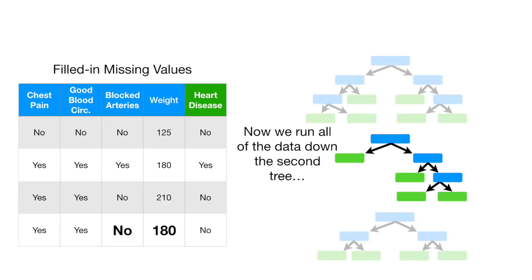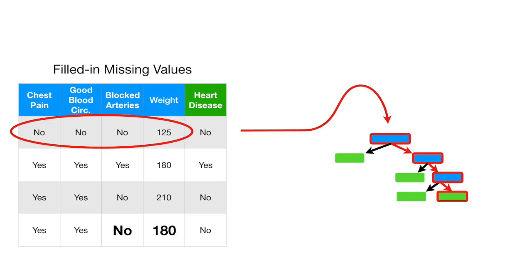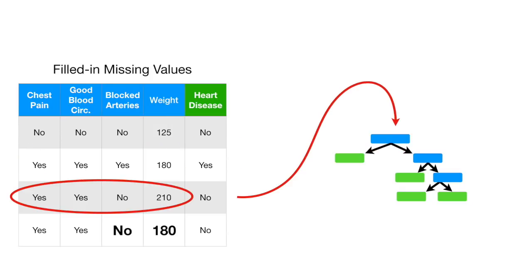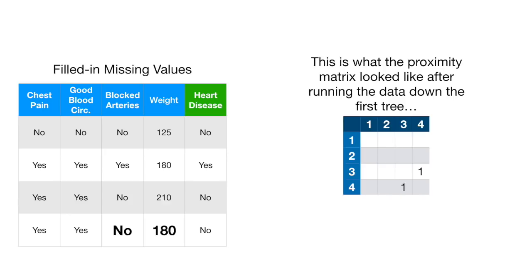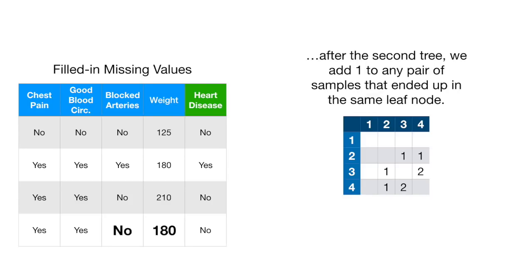Now we run all of the data down the second tree. Note samples two, three, and four all ended up in the same leaf node. This is what the proximity matrix looked like after running the data down the first tree. And after the second tree, we add one to any pair of samples that ended up in the same leaf node. Samples 3 and 4 ended up in the same node together again, and sample 2 also ended up in that same node.